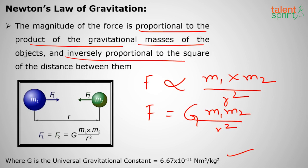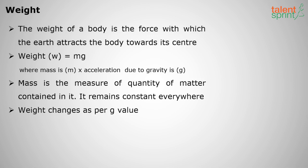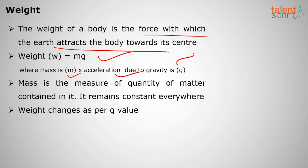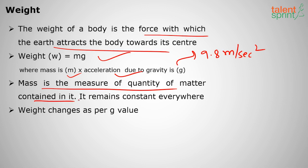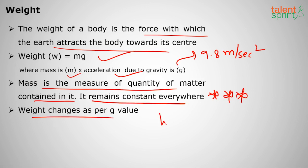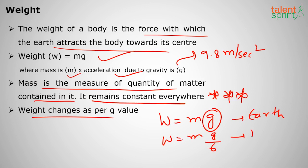Newton discovered gravitation while sitting under an apple tree. Moving on to weight: weight of a body is the force with which the Earth attracts it, given by W = mg, where g = 9.8 m/s². Mass is the measure of the quantity of matter in a body and remains constant always. Weight changes as per the g value — on the Moon, weight equals mg/6, so a 60 kg person would weigh only 10 kg on the Moon.